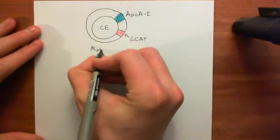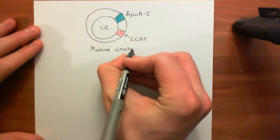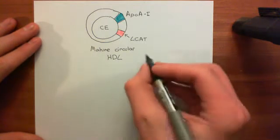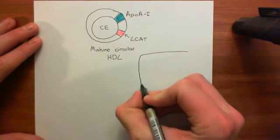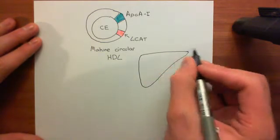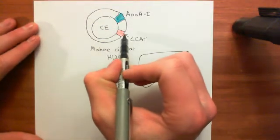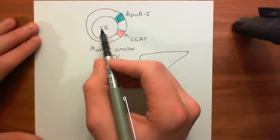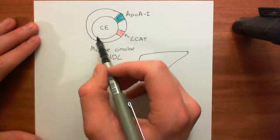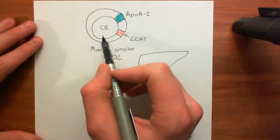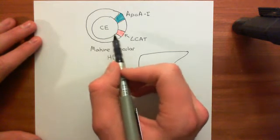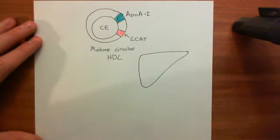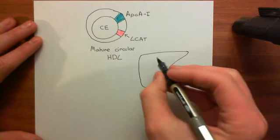The HDL will then go back to the liver to deliver these excess cholesterol molecules. This is why HDL is called good cholesterol — it mops up excess cholesterol and actually stops the formation of atherosclerotic plaques. LDL is called bad cholesterol because having too much of it in your blood results in atherosclerotic plaques being formed, whilst HDL removes excess cholesterol and prevents plaque formation.